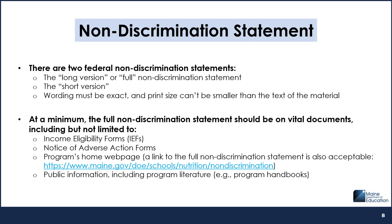There are two versions of the federal non-discrimination statement: the longer version, or the full non-discrimination statement, and the shorter version. The full non-discrimination statement should be included in bigger documents like program handbooks. The full non-discrimination statement, or a link to it, must also be on the homepage of websites or the about page on social media pages.